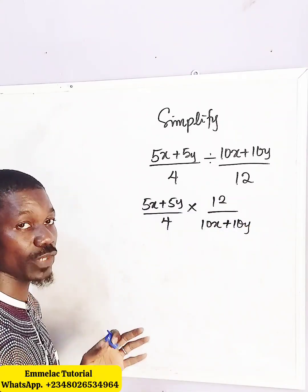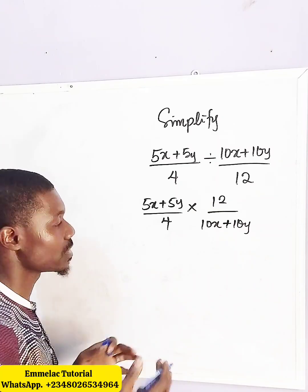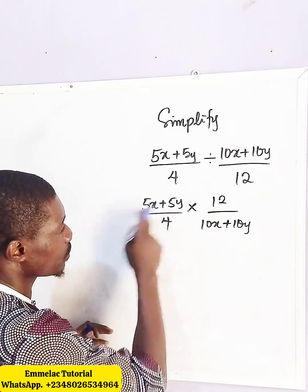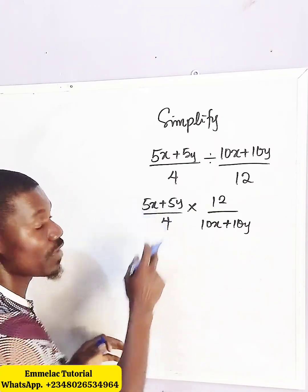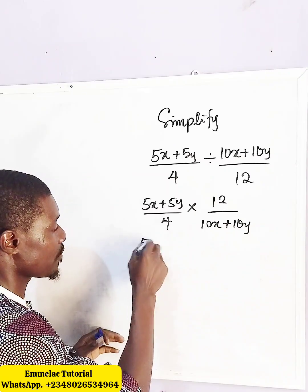So at this point now we can actually eliminate. Now, let us factor out first. You can see we have a common factor here, that's 5. 5 into x plus y all over 4.